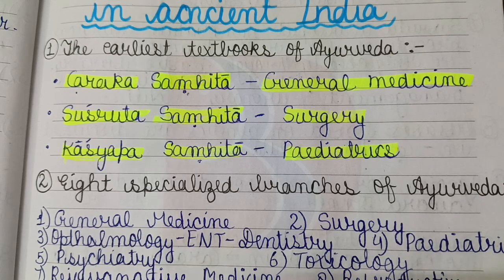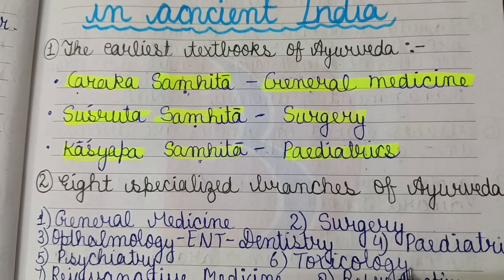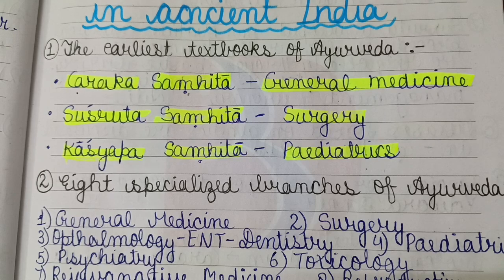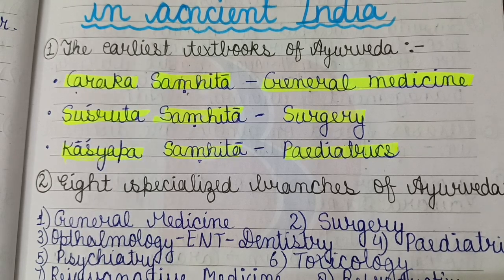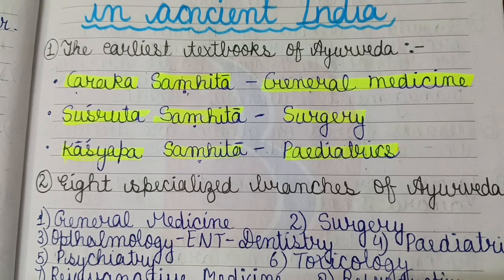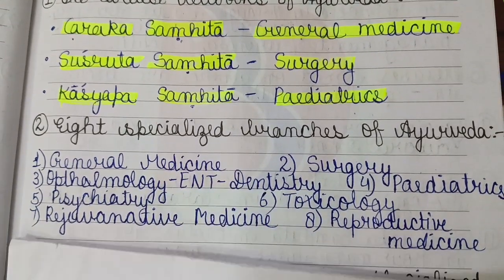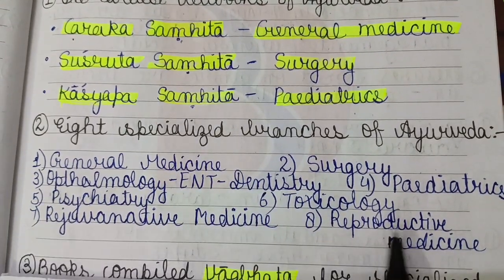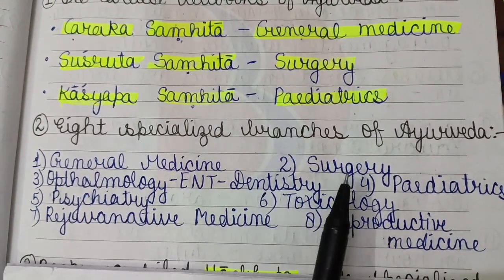The remaining branches are pediatrics, psychiatry, toxicology, and rejuvenative and reproductive medicine. These are the eight branches of Ayurveda.